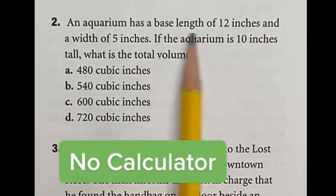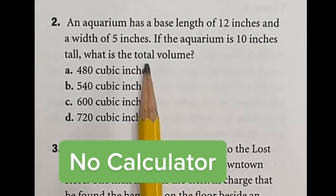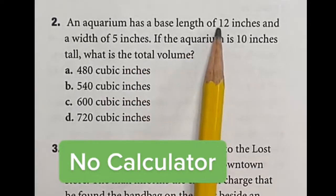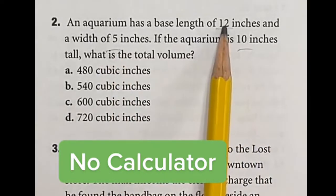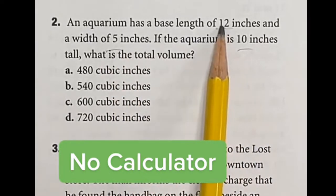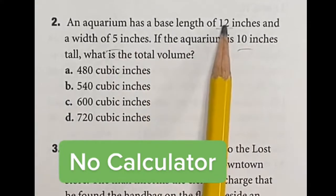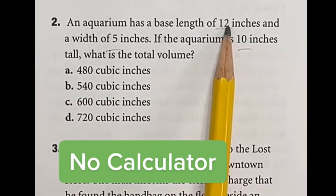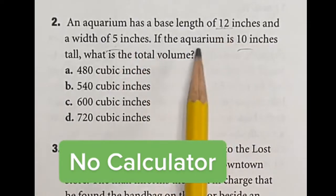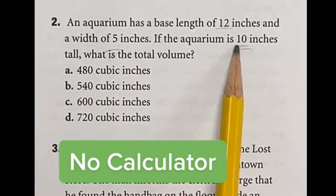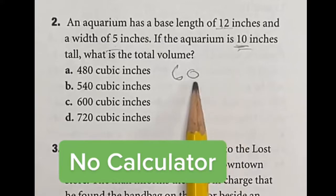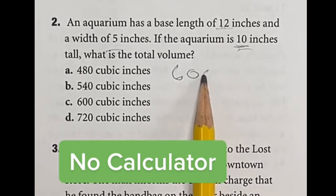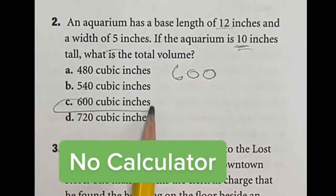When they ask you to find the volume of a rectangular prism, which is just length times width times height, we have to multiply these three numbers without a calculator. 5 times 12 — think of that as 5 times 10, which is 50, plus two more 5s, which is another 10, so that's 60. 60 times 10: anytime you multiply by 10, you just add a 0, so it goes from 60 to 600. So our answer here is C.